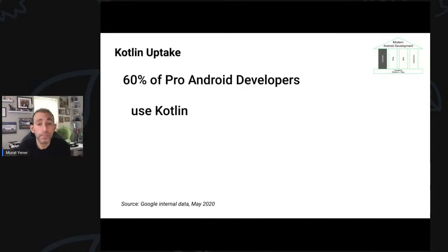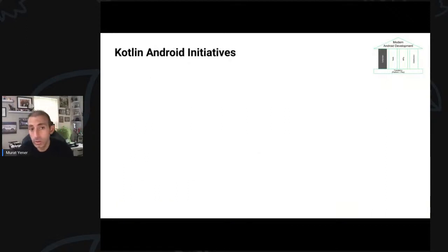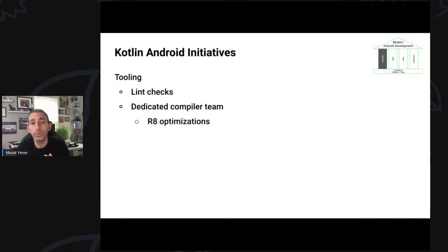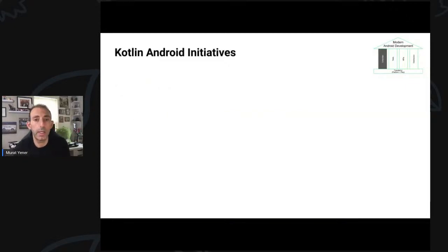If we look at some numbers: 60% of professional Android developers use Kotlin, and 70% of top 1,000 apps contain Kotlin code, which looks really good. On the Google side, we are heavily investing in tooling with lint checks and we have a dedicated compiler team working on optimizing build rates. We're also working on speeding up the annotation processor.